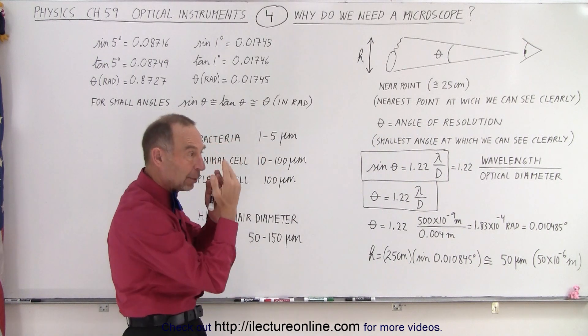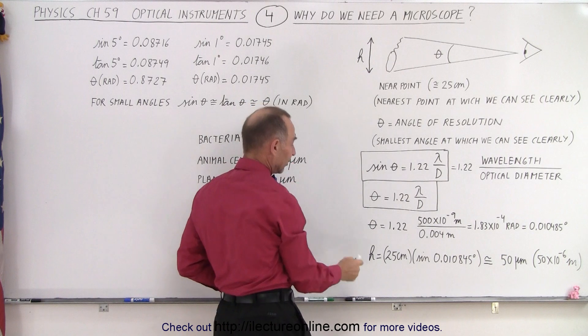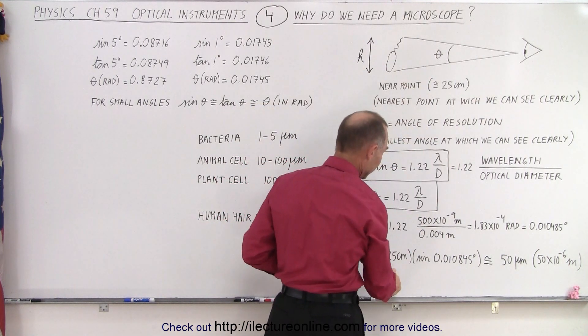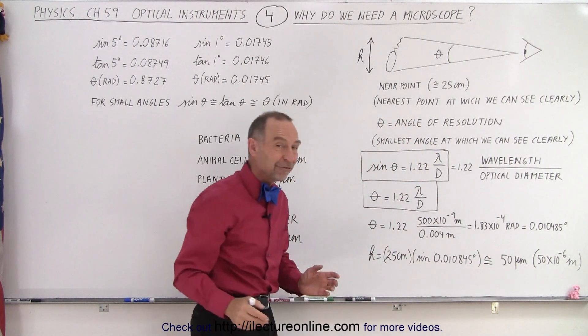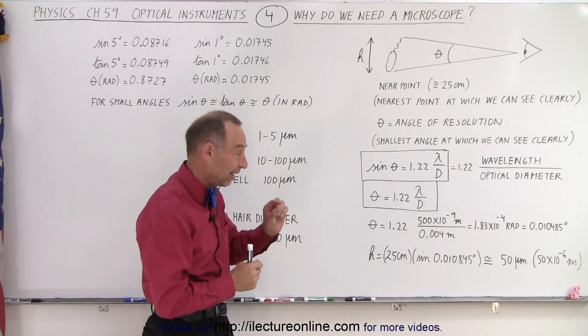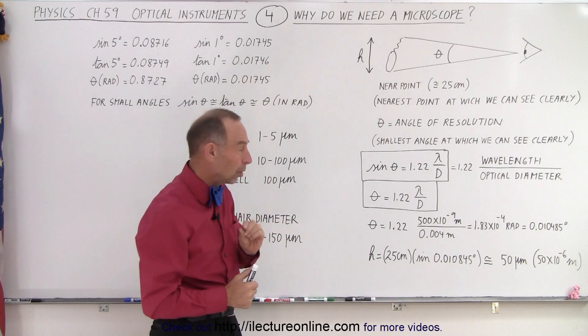That's the smallest object we can see when placed 25 centimeters away. If we then calculate the height of that, we take the distance 25 centimeters times the sine of the angle, and we get a size of about 50 micrometers, 50 times 10 to the minus 6 meters. That's 1/20th of a millimeter. Wow, we can see things that small.